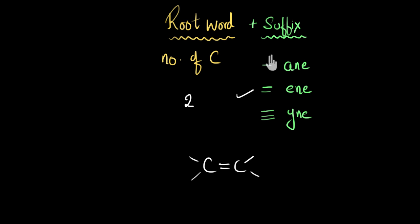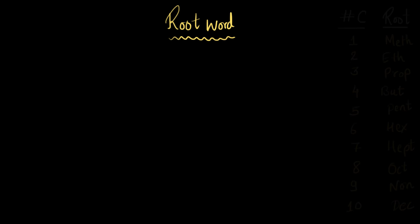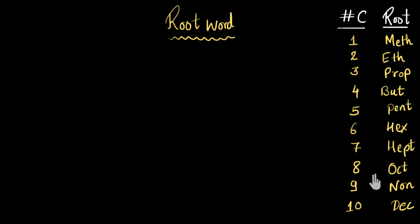Root words are words that denote the number of carbon atoms present in the molecule. Traditionally, we use these root words: if there is only one carbon atom, we use the root word 'meth'; for two, we use 'eth'; for three, 'prop'; for four, 'but'; and so on and so forth.